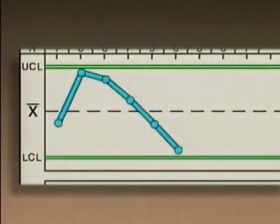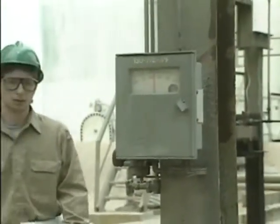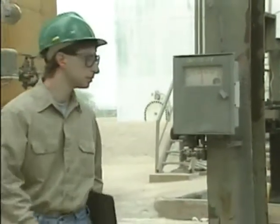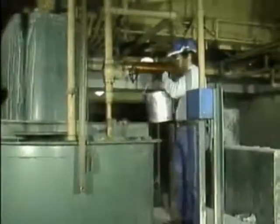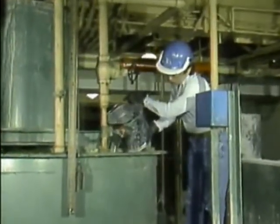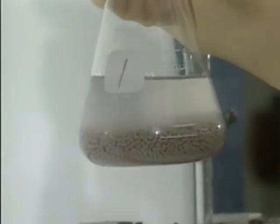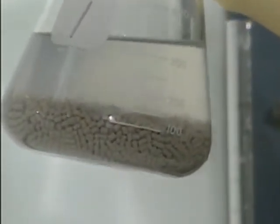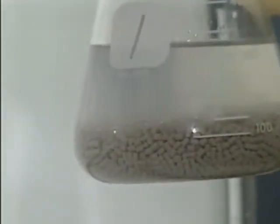Another pattern of instability is a trend. A trend is a pattern of points that gradually moves in an upward or downward direction. A trend could be an indication that process equipment is malfunctioning, that the portions of the materials entering a process have changed, or that properties of those materials such as the purity, density, or viscosity have changed.